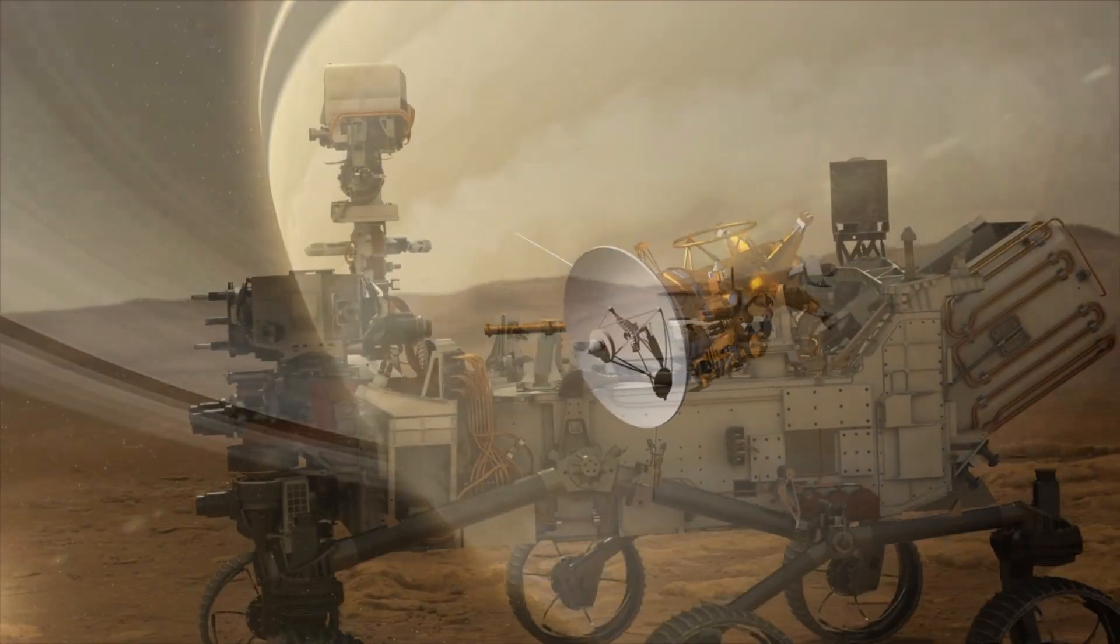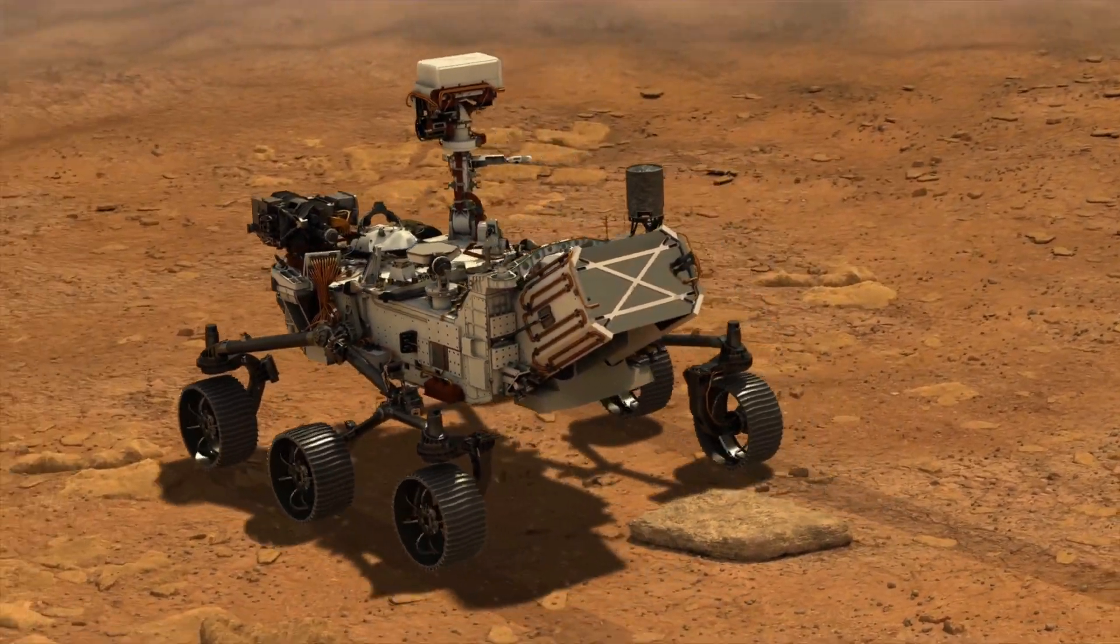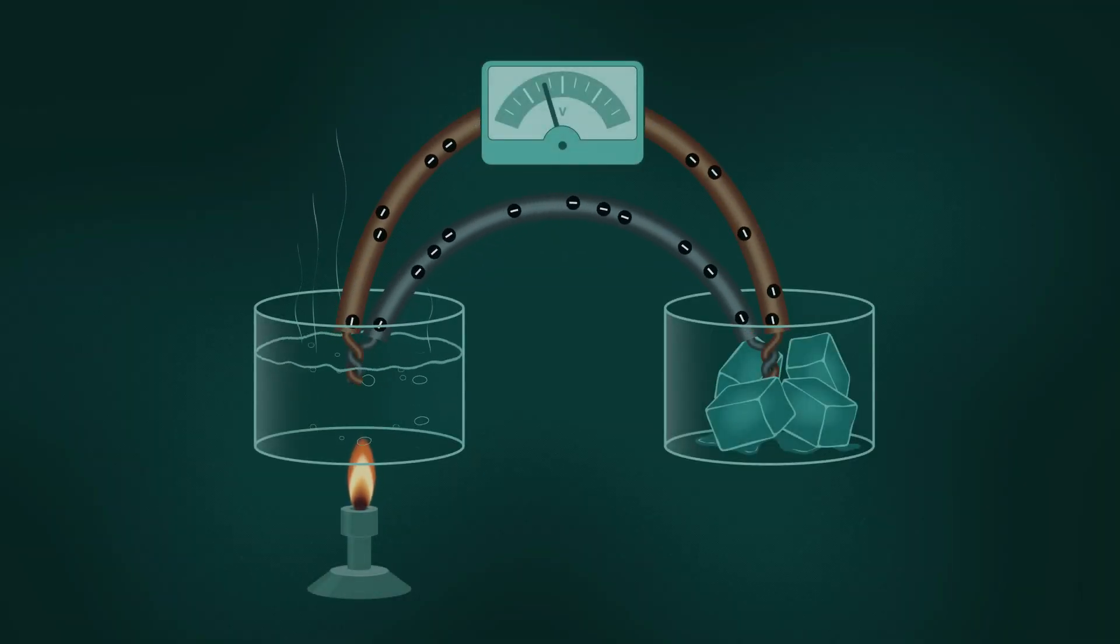For example, NASA's two Voyager space probes, powered by RTGs, have been carrying on steadily since their launch back in 1977.